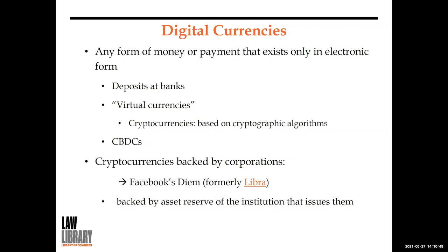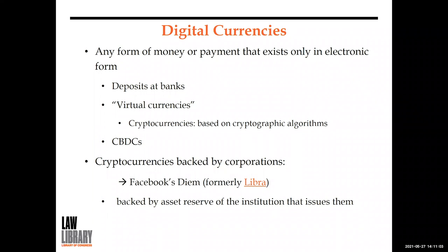What are cryptocurrencies? Cryptocurrencies are a type of virtual currency that use cryptographic algorithms to validate and secure transactions. Those transactions are digitally recorded on a distributed ledger, such as a blockchain. They are very volatile. The question is really: are they money? Are they widely accepted as a medium of exchange? Bitcoin is probably here to stay and is more and more used, but it's still not widely accepted as a medium of exchange.